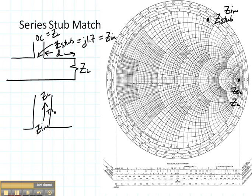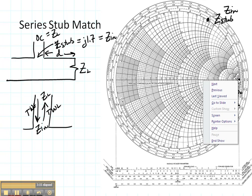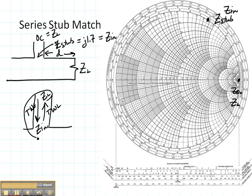If I want to go from my input to my load, that is towards the load. If I want to go from the load to the input, that is towards the generator. So if I am at my load and I want to go to my input, I'm going to go towards the load. I'm sorry. If I'm at my load and I want to go towards the input, I'm going to go towards the generator.